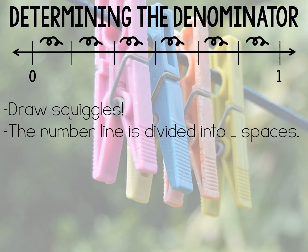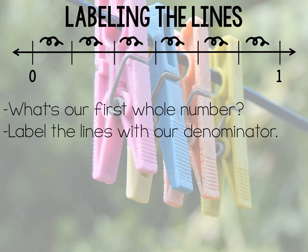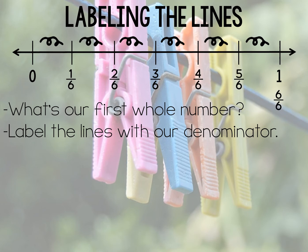So the denominator for this number line would be six. Now that we've drawn our squiggles and determined the number line is divided into six parts, students are ready to label the lines. The first thing they do is identify the first whole number — in this case, zero. Students would then label the fractions with six as the denominator: one-sixth, two-sixths, three-sixths, four-sixths, five-sixths, six-sixths.